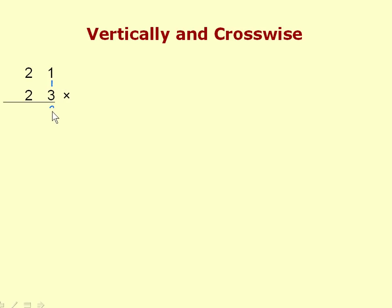First we multiply vertically on the right: 1 times 3 is 3. Then we multiply crosswise — 2 by 3 and 1 by 2: 2 times 3 is 6, 1 times 2 is 2, and 6 and 2 add up to 8. Finally we multiply vertically on the left: 2 times 2 is 4. The answer is 483, obtained in one line using this simple pattern.